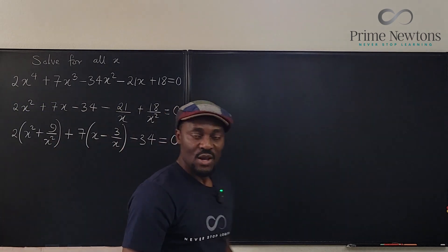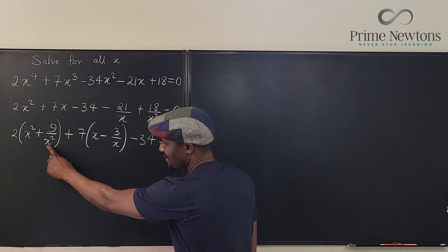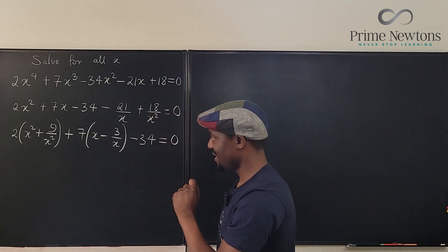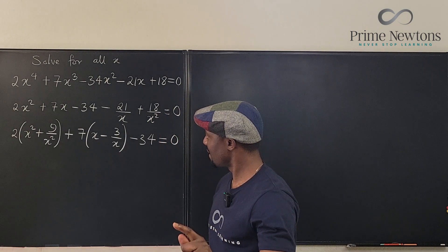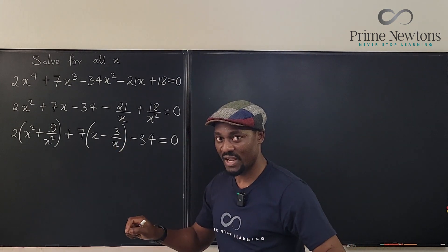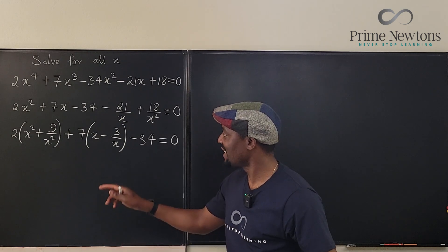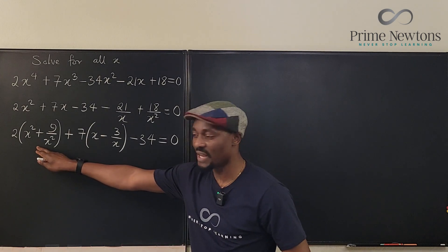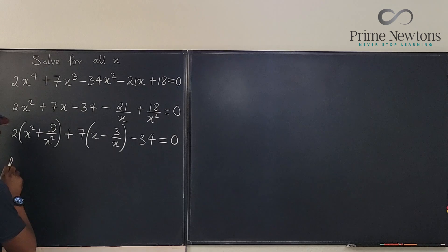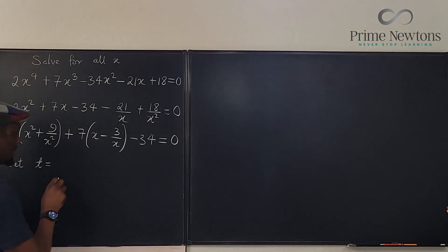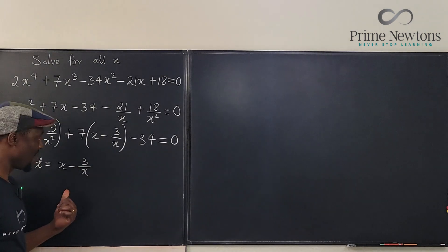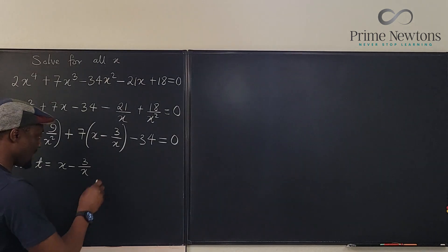It looks like this is the square of this, but we cannot say that this is the square of this. But if we replace this with a t substitution, like I normally would like to do, or u substitution if you like, we can see something come out of this. So what we're going to do is say let t be equal to x minus 3 over x. Remember, this is what we did in the case of the palindromic equations.